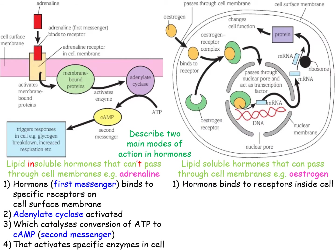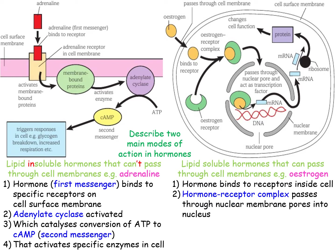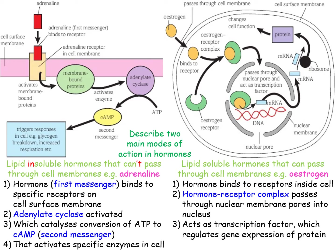In the case of adrenaline, this can tell the liver to break down glycogen into glucose. For lipid-soluble hormones like oestrogen, the hormone binds to receptors inside the cell. The hormone-receptor complex then passes through the nuclear membrane pores into the nucleus, where it acts as a transcription factor regulating gene expression - as learned in topic 7. This modifies cell activity. So lipid-insoluble hormones use a first/second messenger system (cAMP), while lipid-soluble hormones act as transcription factors.